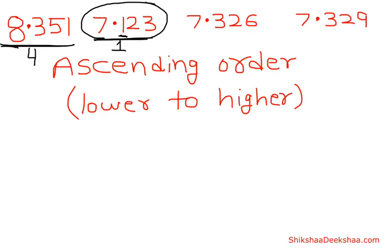Now we are left with two numbers that have the same whole number and the same tenths digit. Let's compare their hundredths digit — it is also the same. Let's compare their thousandths digit: it is 6 and 9. Since 6 is less than 9, this number is less than the other.